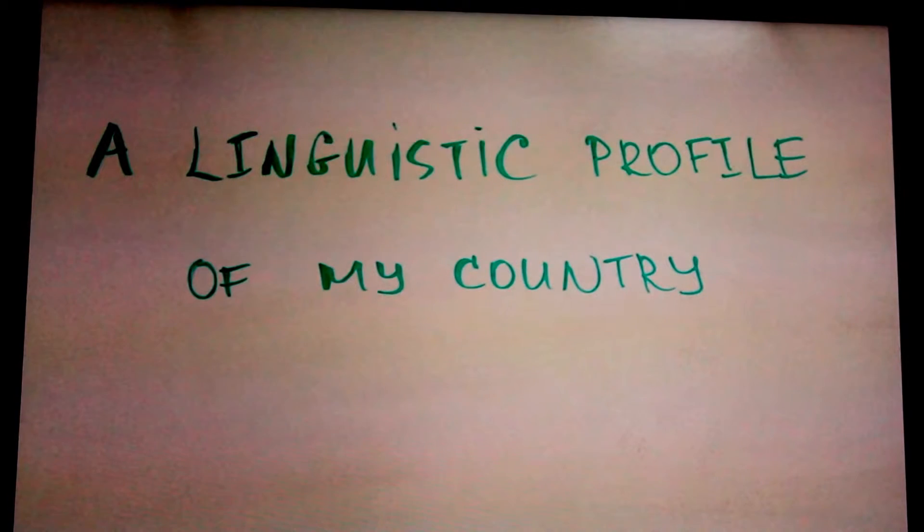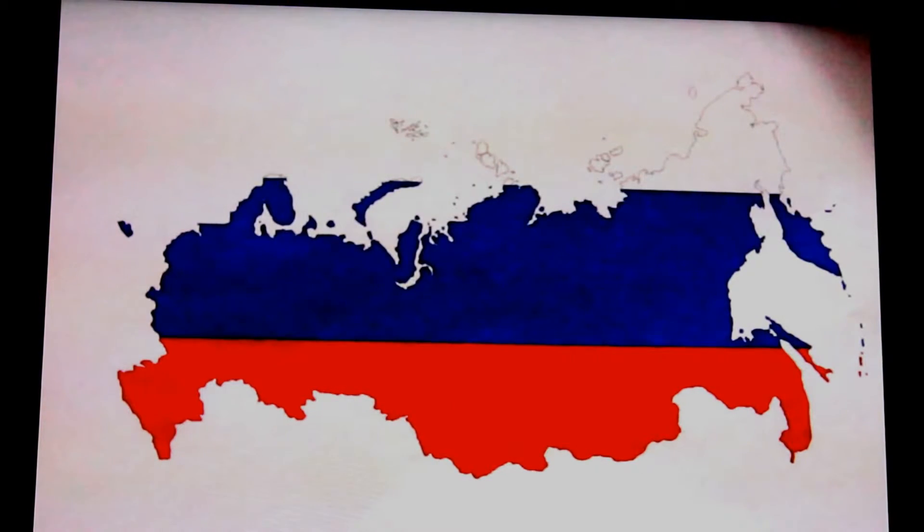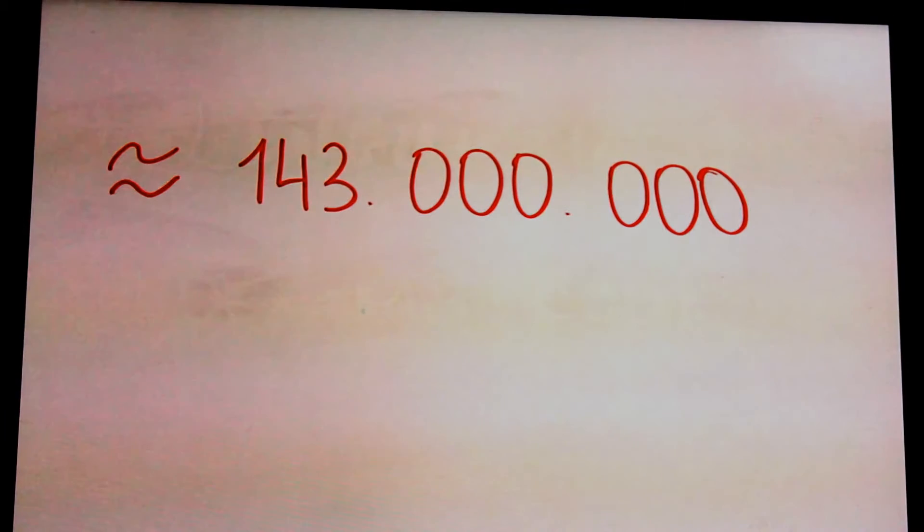A linguistic profile of my country. Russia is huge. There are nine time zones in Russia. The population is always changing. Now it's about 143 million people.